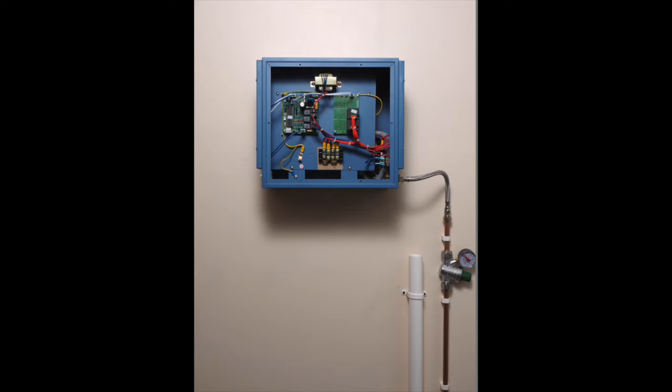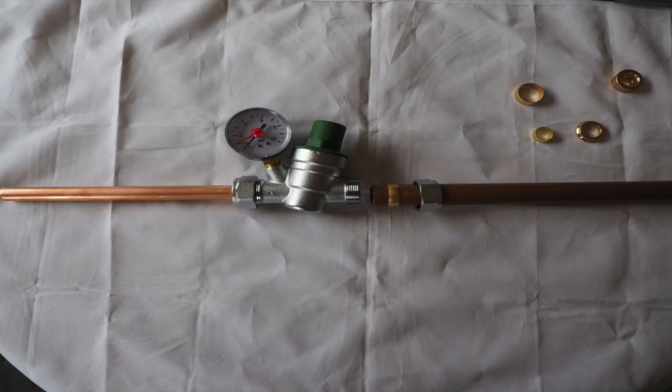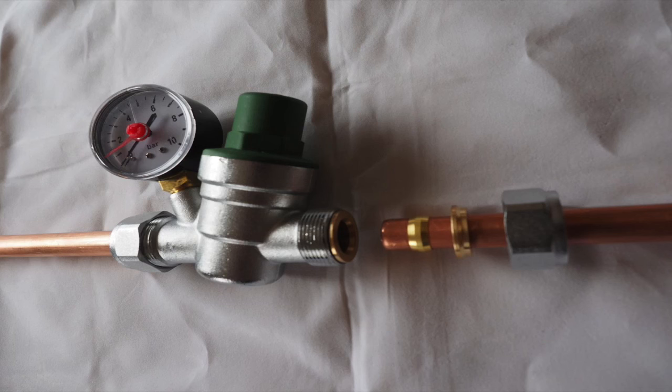There should be a pressure reducing valve in front of the steam generator on the water supply. This should be set at a maximum of one bar. Set the pressure when the water is flowing. Most pressure reducing valves will come with a 22 millimetre or 15 millimetre conversion kit.